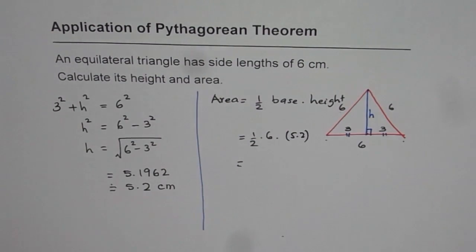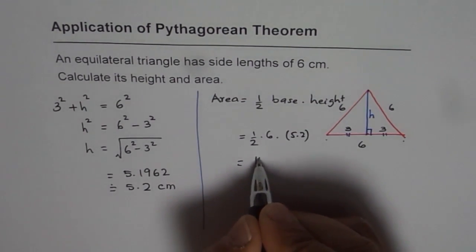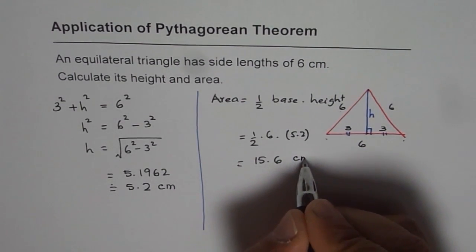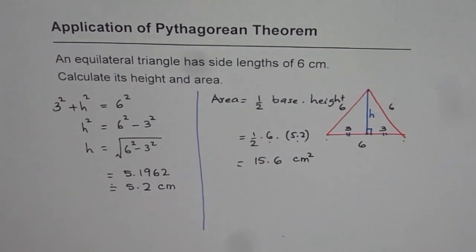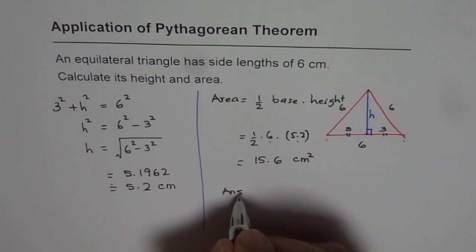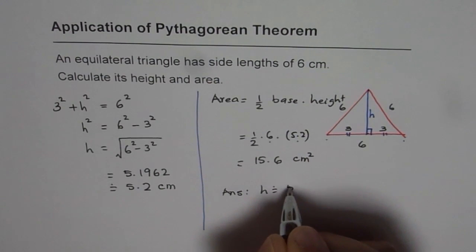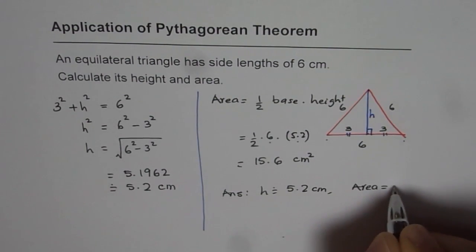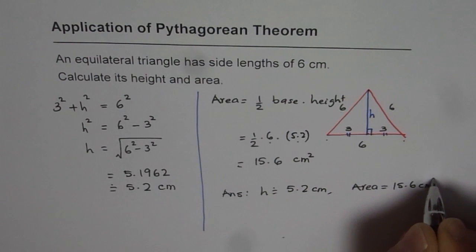So let us do our math. That is 5.2 times 6 divided by 2. So it is 5.2 times 6 divided by 2 will give us 15.6. And the unit should be centimeters squared. Centimeter times centimeter gives you centimeters squared. So we get our answer and the answer is height equals to approximately 5.2 centimeters and area is equals to 15.6 centimeters squared.